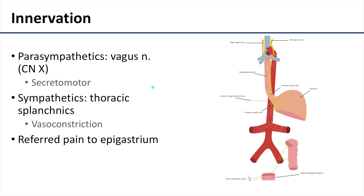Lastly, we can't forget innervation. Like most viscera in this area, the pancreas has both parasympathetic innervation derived from the vagus nerve and sympathetic innervation from the thoracic splanchnic nerves, particularly the greater and lesser splanchnic nerves. Parasympathetics are secretomotor, while sympathetics are vasoconstrictors for the vasculature associated with the pancreas. In common with other foregut structures, the majority of pain from the pancreas is referred to the epigastric region — just anterior to the stomach, or the central superior abdominal area.